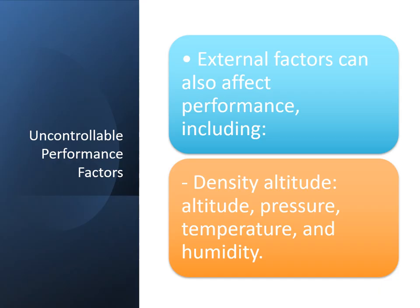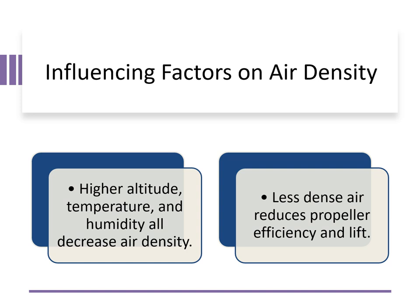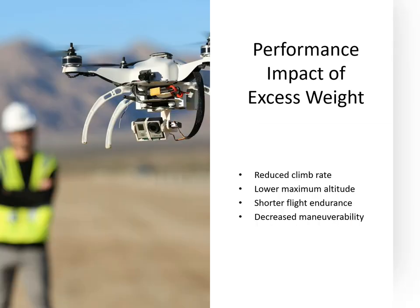Now let's move to some uncontrolled performance factors. Beyond weight and balance, critical environmental conditions also play a role in flight performance. One key factor is density altitude, which is affected by altitude, air pressure, temperature, and humidity. When you fly at higher altitudes or in conditions with higher temperatures and humidity, the air becomes less dense. This can reduce the efficiency of the drone's propellers, requiring more power to maintain altitude and stability.